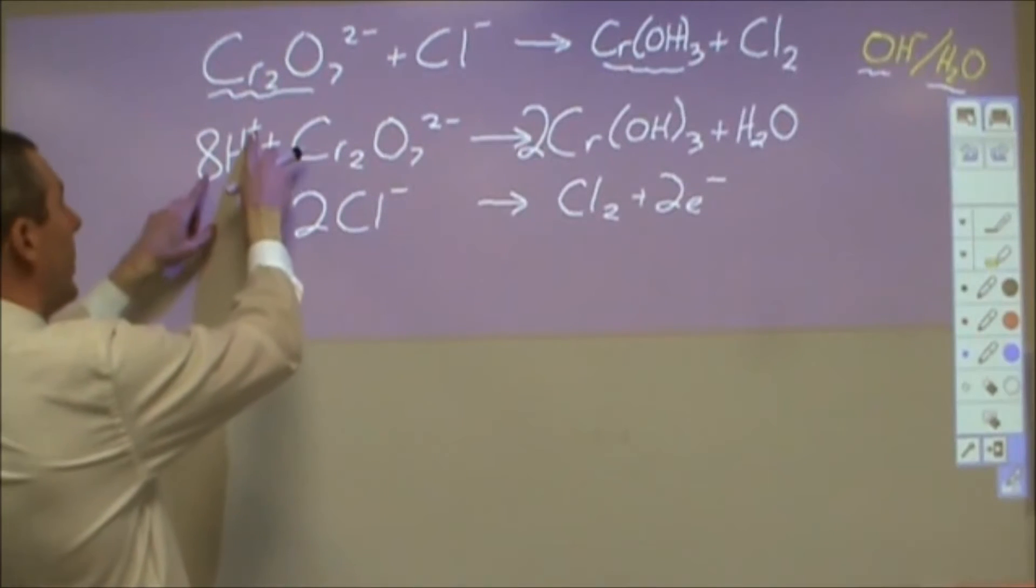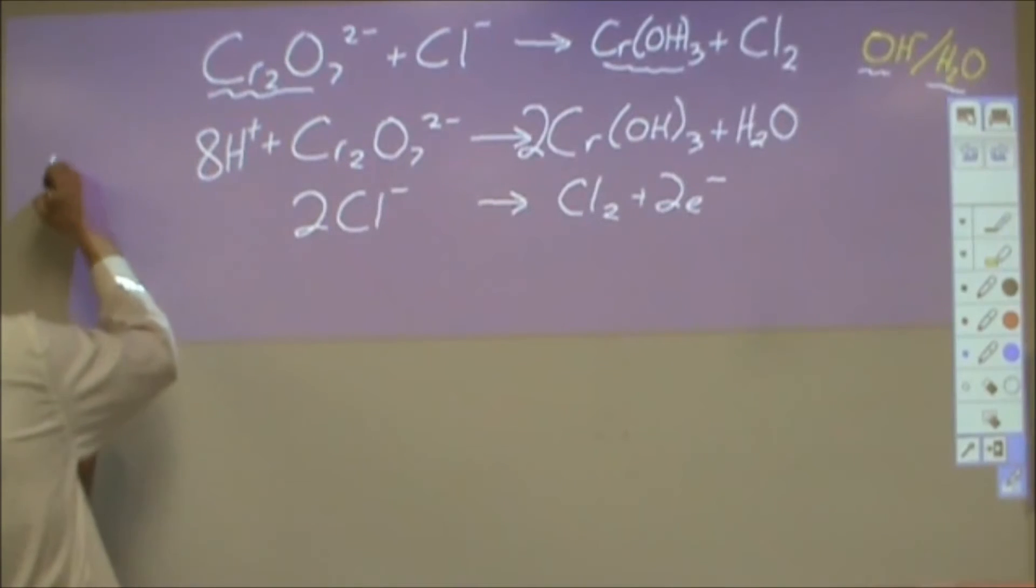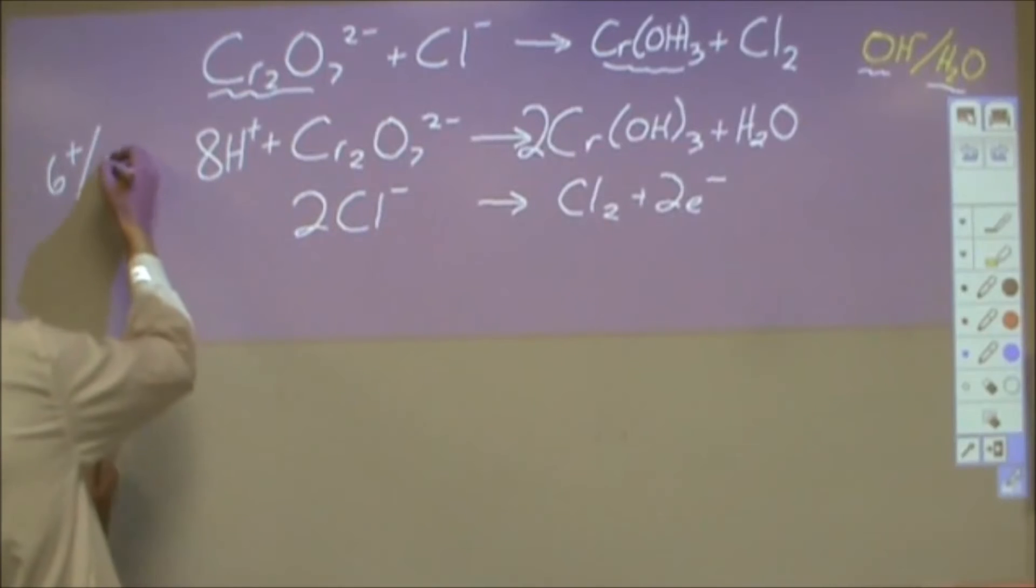For the top one, I have eight plus charges and a two minus charge, so currently I have six plus on the one side. And on the other side I have neutral salts and molecules so I have no charge on the other side. So I'm off by six. So I'm going to put six electrons right here for the rest of this equation.